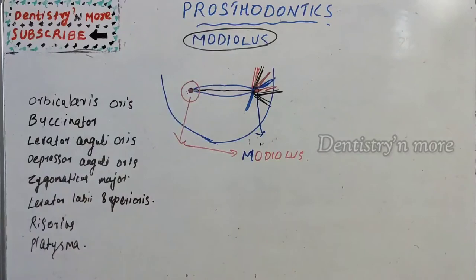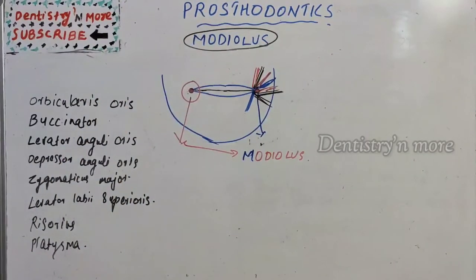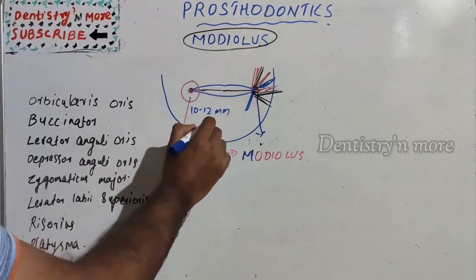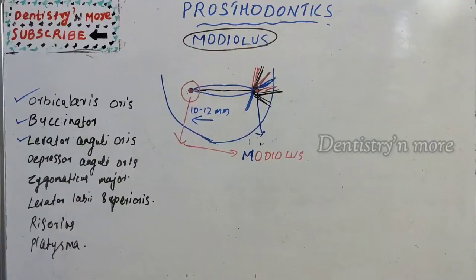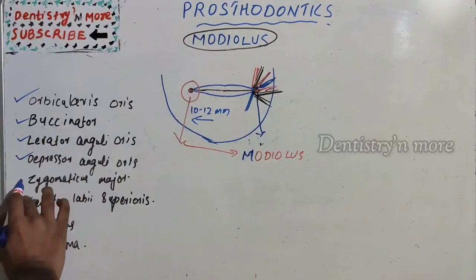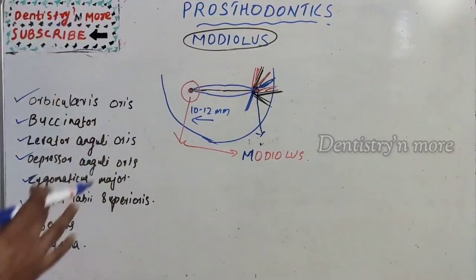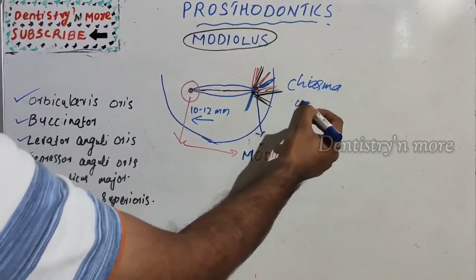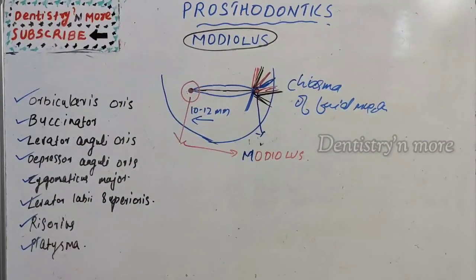Modiolus is a point where many of the facial muscles intersect, located exactly around 10 to 12 millimeters lateral to the angle of mouth. It comprises various muscles such as orbicularis oris, buccinator, levator anguli oris, depressor anguli oris, zygomaticus major, levator labii superioris, risorius, and platysma. Chiasma is nothing but a point where two or more structures are intersected.